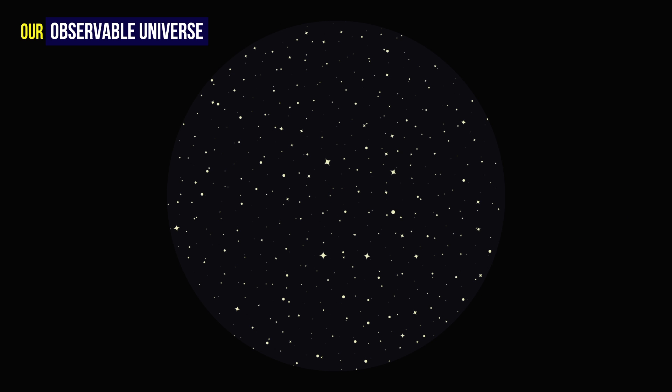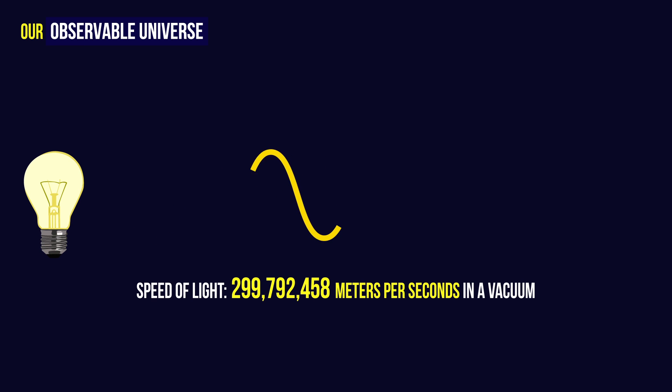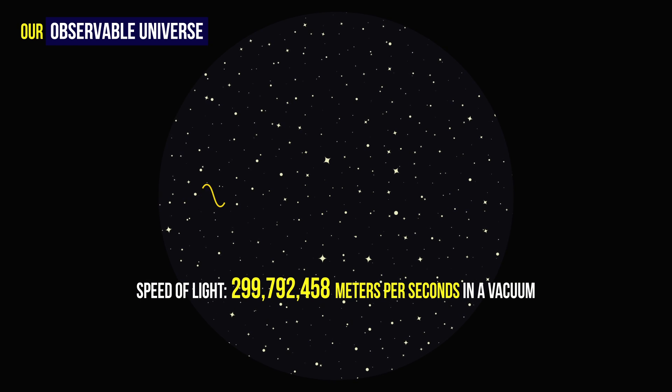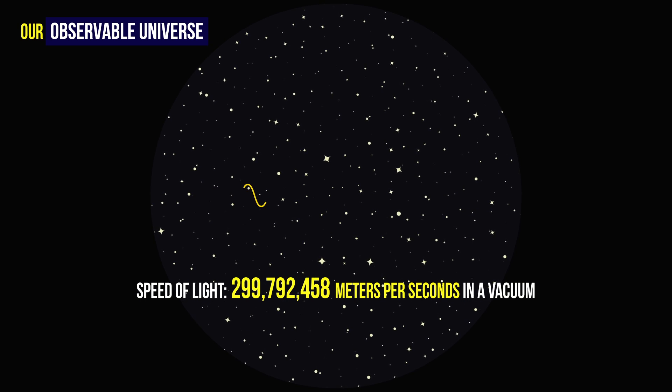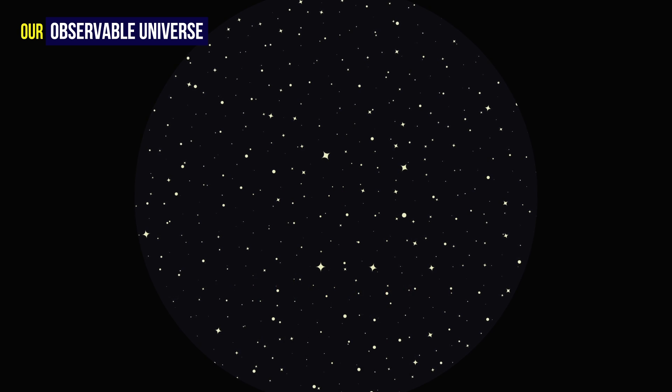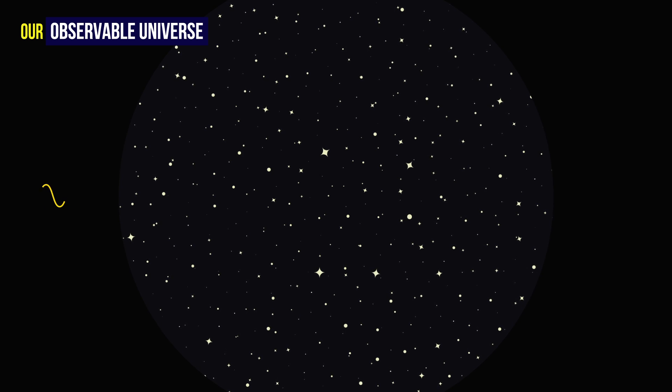However, in all cases, the farthest an observer can see is about 46.5 billion light-years. Why at this particular distance? Light traveling at a constant speed, 46.5 billion light-years represents the maximum distance an object can be from a point in space for its light to surpass the rate of the universe expansion and to reach the point. Any light emanating from an object farther than this distance simply never reaches the observer.